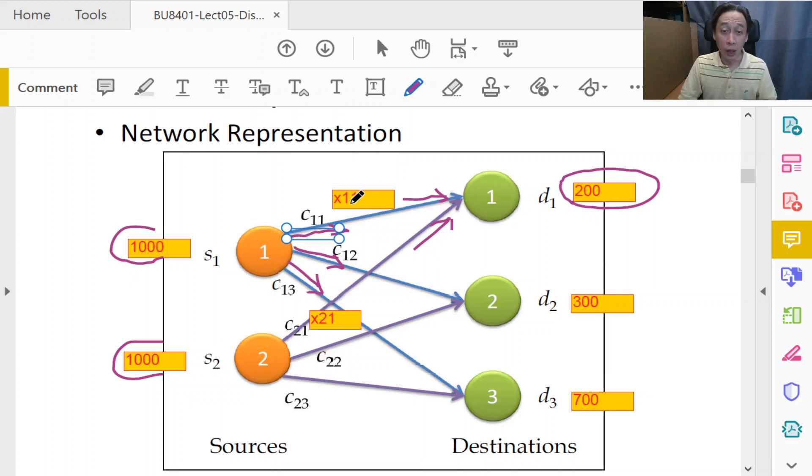If we look at customer one, to fulfill its demanded quantity of 200, we will have x11 plus x21 must equal 200. Likewise, we will have one constraint per customer so that all the total inputs must sum up to the stated demand.